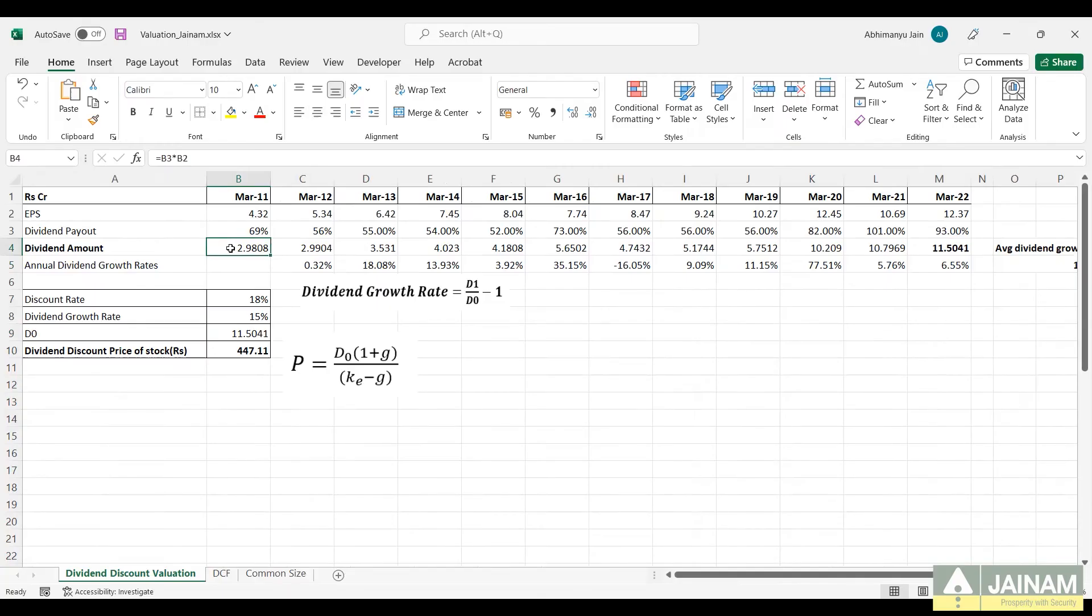Now let us understand it with an example. These are the previous 10 year dividends of the company. First, we calculate the annual year on year dividend growth rate using this formula. For example, for the year 2012, we take D0 as the dividend of the year 2011 and D1 as the dividend of the year 2012.